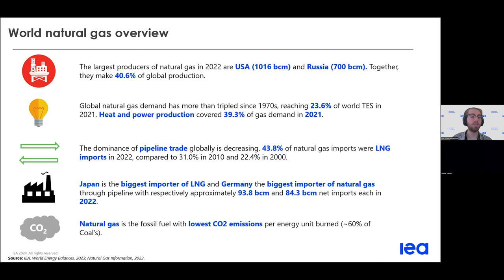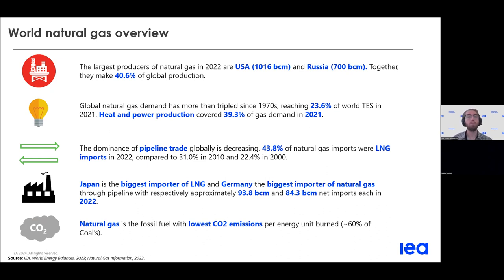On to emissions: natural gas benefits from being the fossil fuel that has the lowest emissions per energy unit burned. It emits around 40% to 50% less CO2 than coal, and around 30% less than oil per energy unit burned. Because of this, many people consider natural gas a key transition fuel as we move to cleaner energy systems.